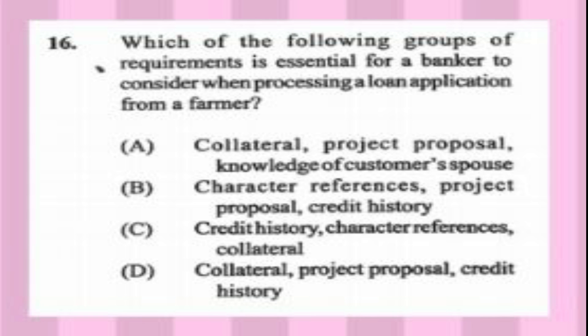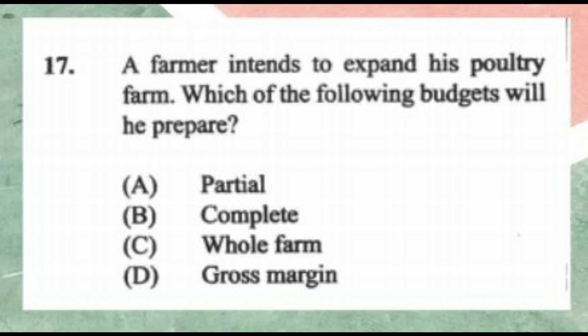Question number sixteen: which group of requirements is essential for a banker to process a loan application from a farmer? A) collateral, project proposal, knowledge of consumers' spouse, B) character references, project proposal, credit history, C) credit history, character references, collateral, D) collateral, project proposal, credit history. The answer is D, collateral, project proposal, and credit history.